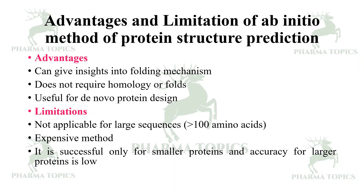The ab initio method is preferable only when both homology modeling and threading modeling fail. This has been a brief overview of the ab initio method for protein structure prediction.